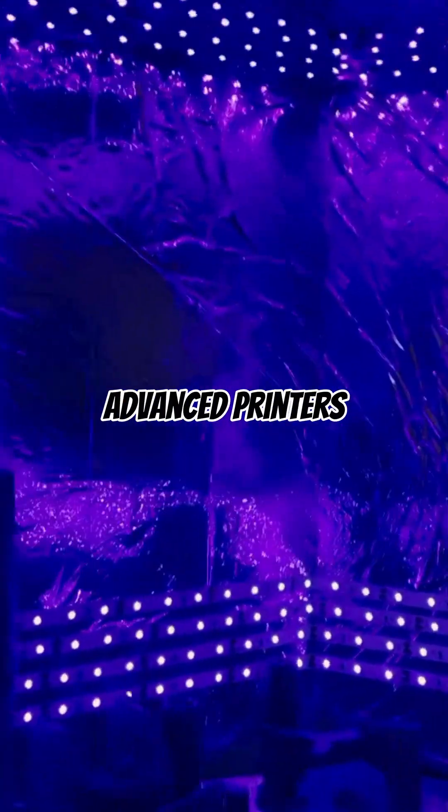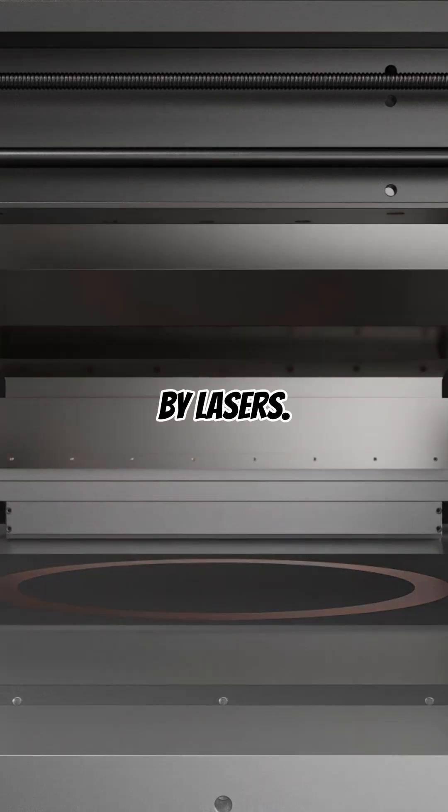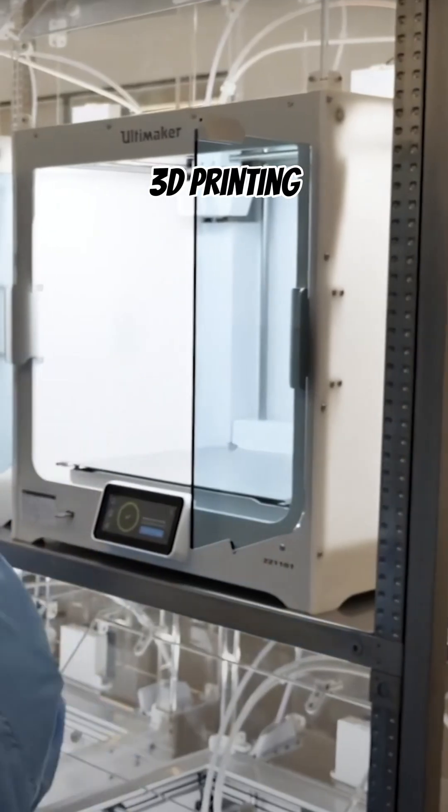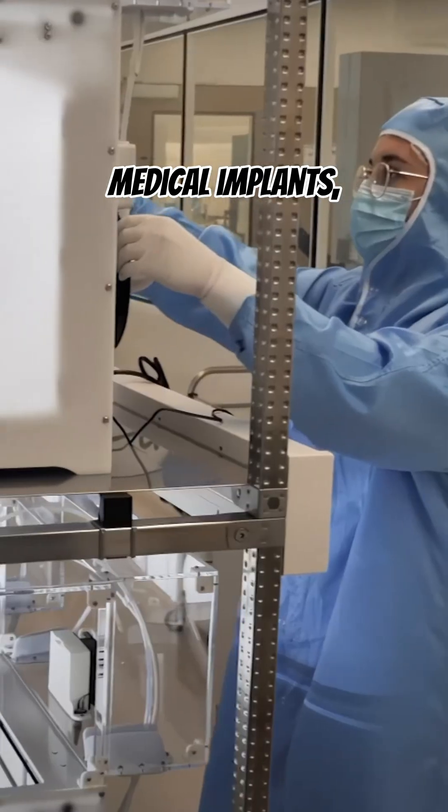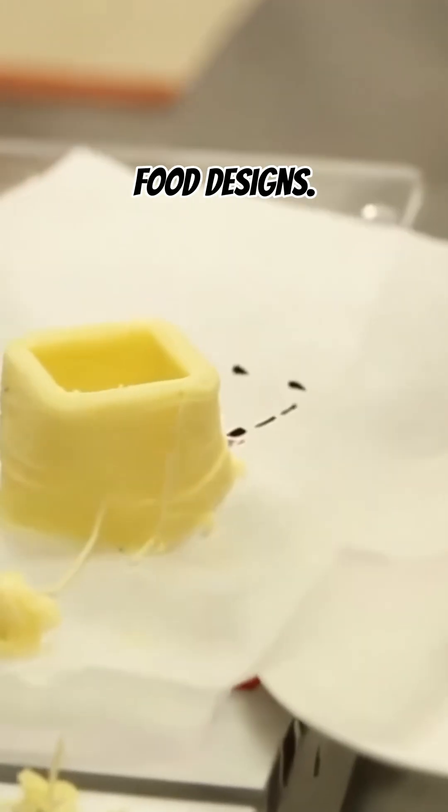More advanced printers use resin cured by ultraviolet light, or even powdered metals fused by lasers. 3D printing is used to create medical implants, aerospace components, prototypes, tools, and even edible food designs.